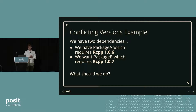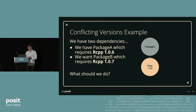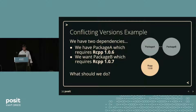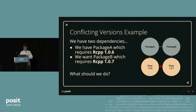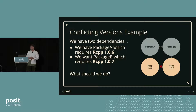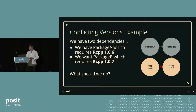With that information, we can look at a conflicting versions example. Say we have package A that relies on some version of RCPP — call it 1.0.6. This is all good and dandy until we want package B, which requires RCPP 1.0.7. That probably won't work, so what should we do? We could use RCPP 1.0.6 for package A and 1.0.7 for package B, but a lot of languages won't allow that, and even if they did, it would be pretty hard to manage. We could potentially upgrade package A, but that depends on whether the author has actually upgraded it on GitHub or CRAN. We could try downgrading package B, but that author might not have a version that works with RCPP 1.0.6.